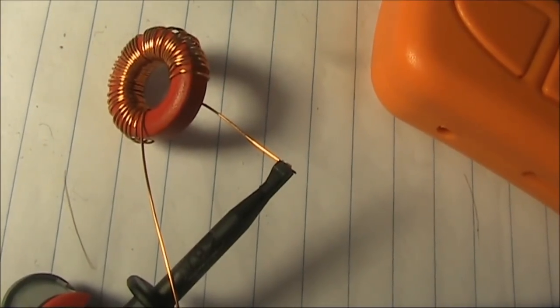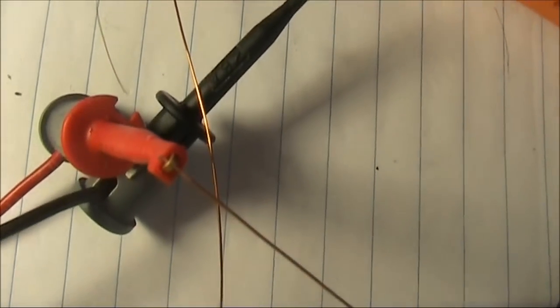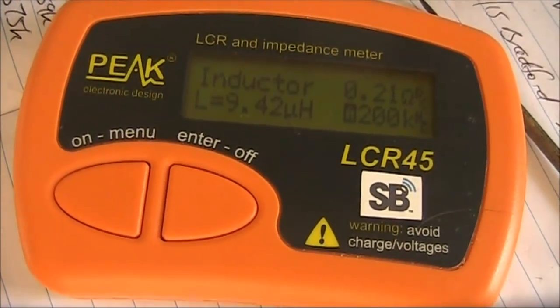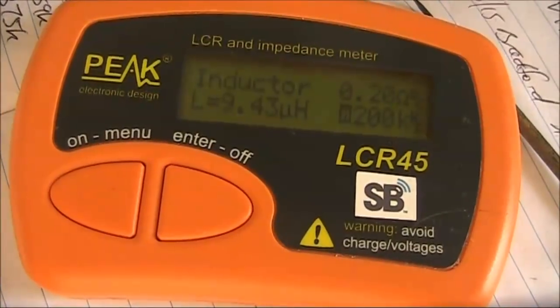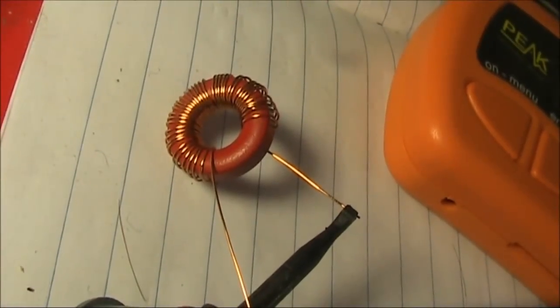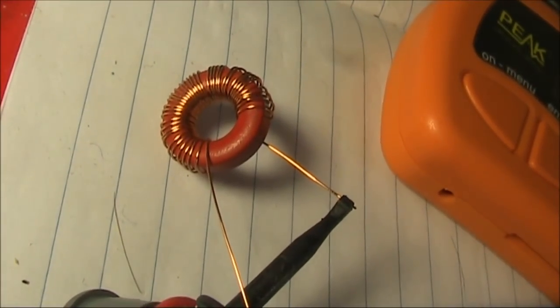This is 39 turns, with a long tail, as I haven't cut it off yet. And on the LCR45, 9.43. So to get the inductance low, we'll first of all cut off the excess tail.